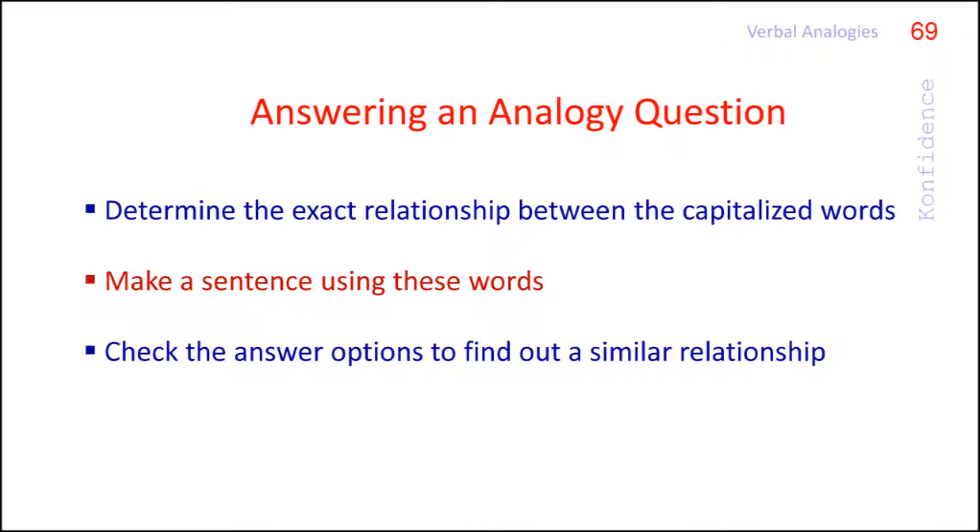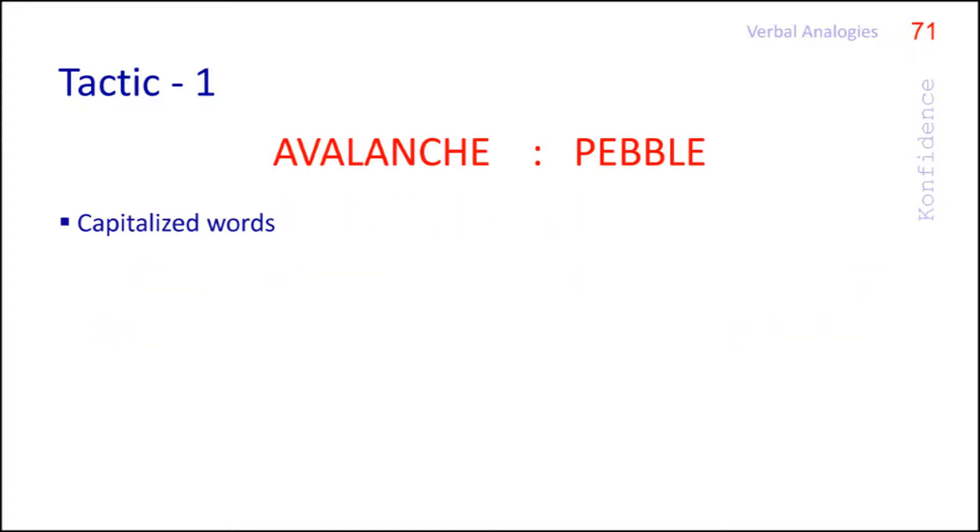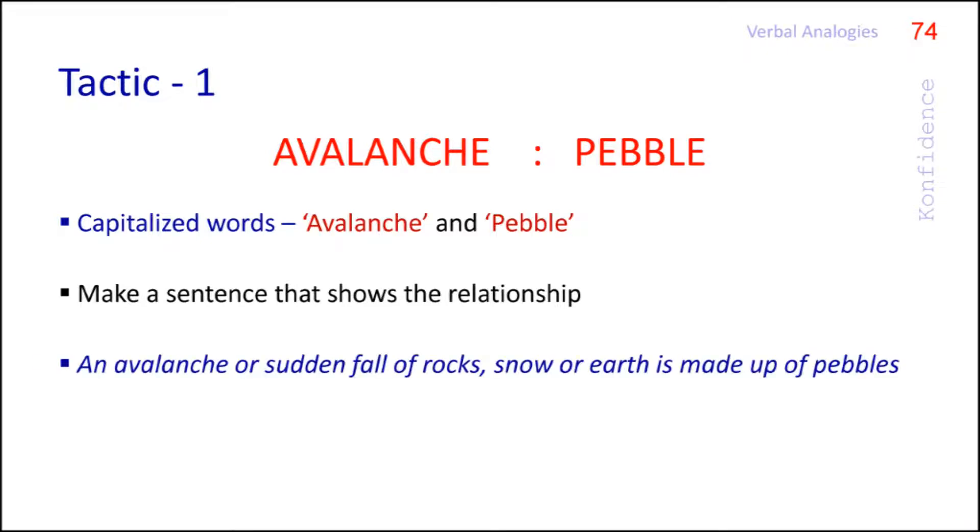Let us try this technique with an example. Here the capitalized words given are avalanche and pebble. How are they related? Well, we can make a sentence that shows the relationship like this. An avalanche or sudden fall of rocks, snow or earth is made up of pebbles. Now we can check the answer options.